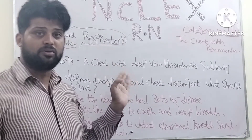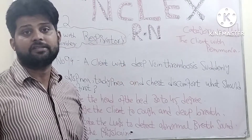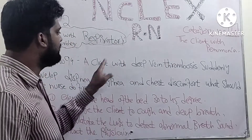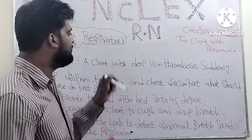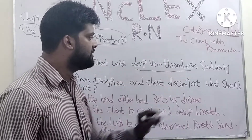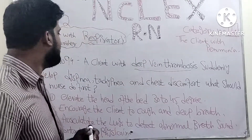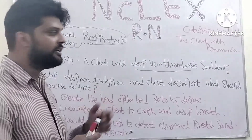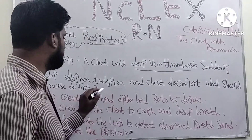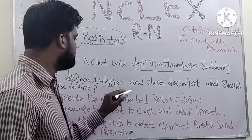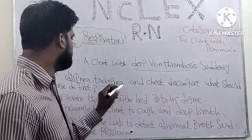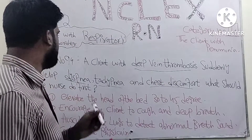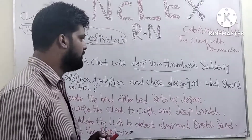Some students didn't understand English well, so I will also discuss in Urdu. A client with deep vein thrombosis suddenly developed dyspnea — dyspnea means difficulty in breathing — tachypnea means rapid breathing, and chest discomfort. What should the nurse do first?